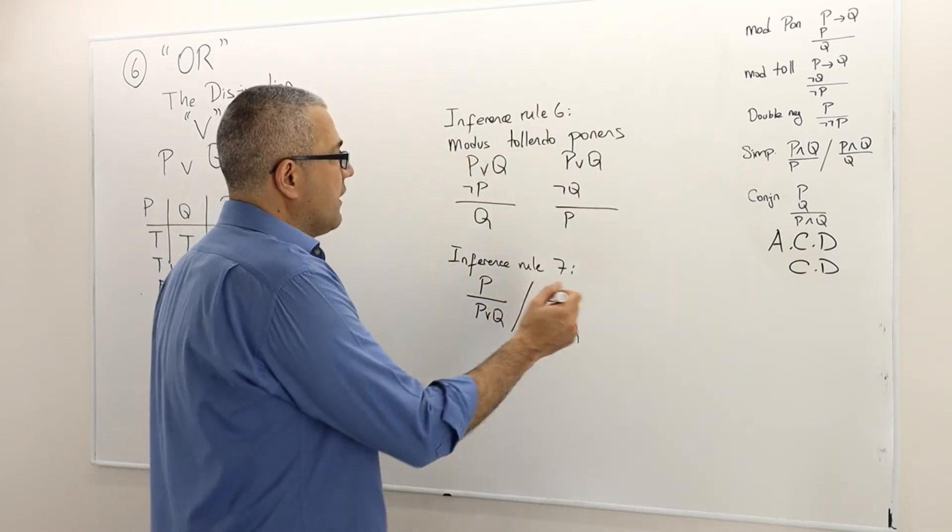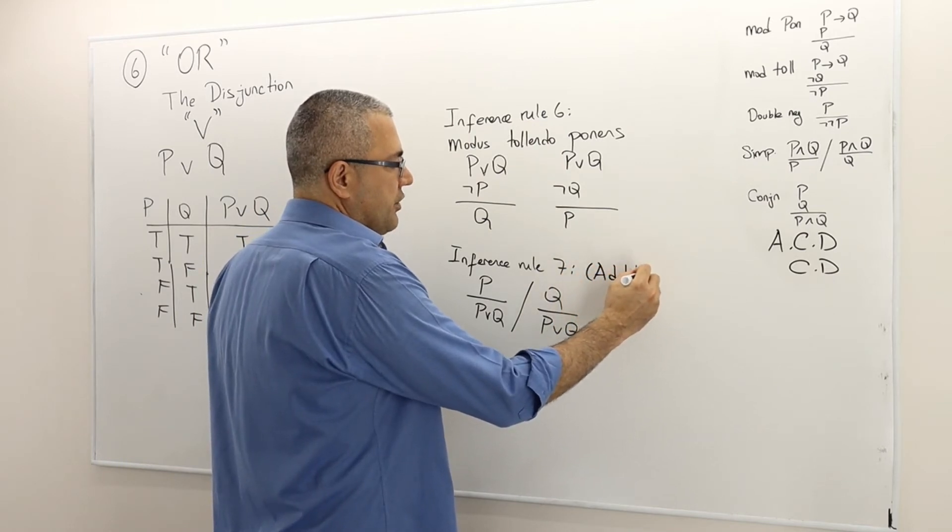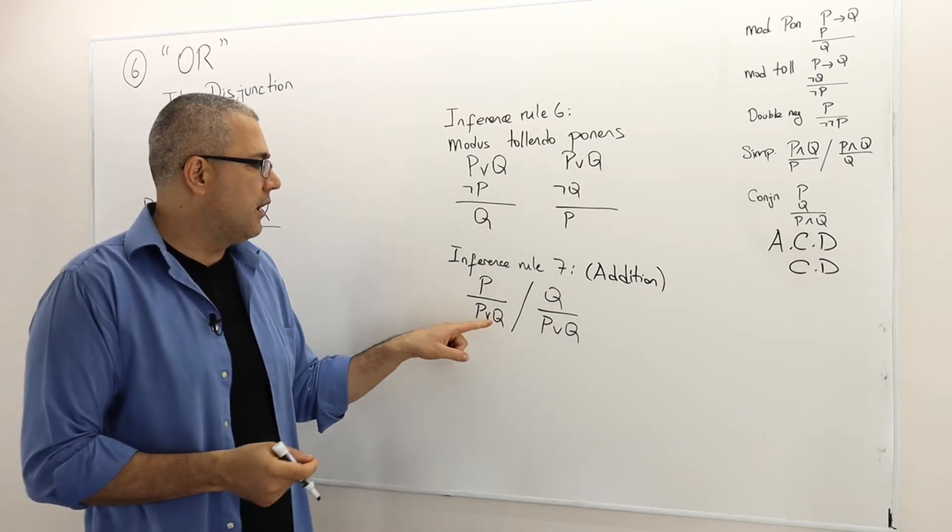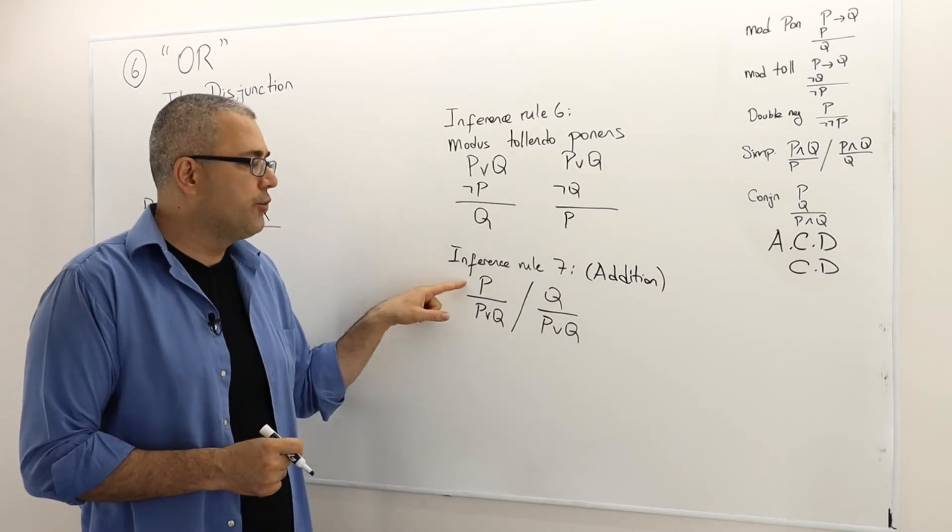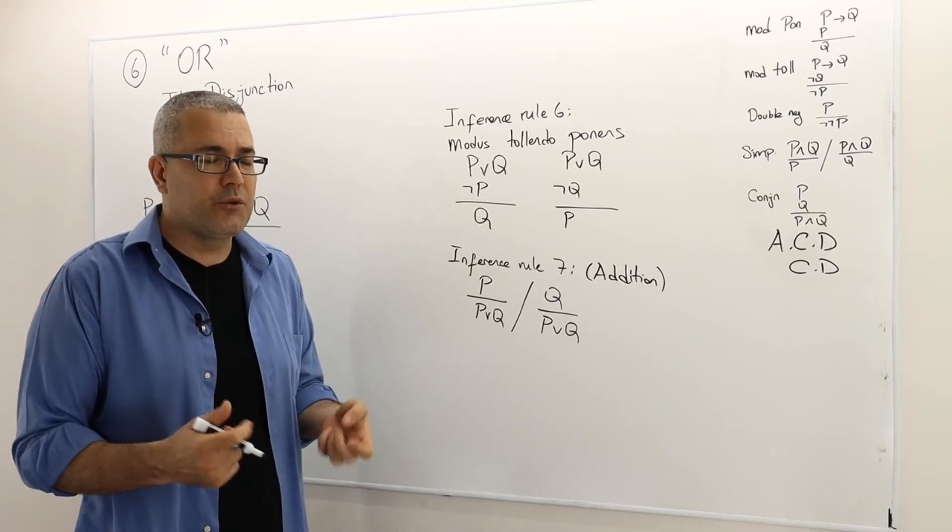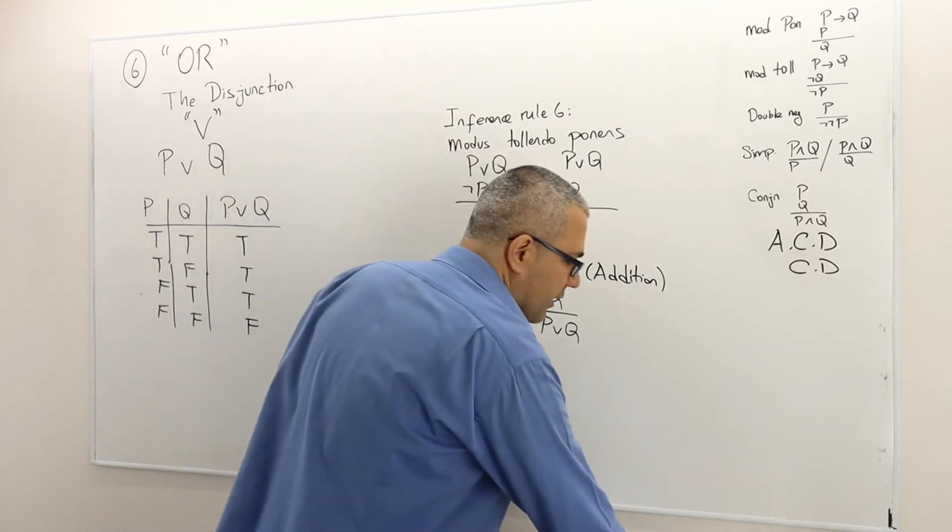Oh by the way, I forgot to write this. We call this rule addition. Adding extra atomic sentences to the true statement is not going to change the truth value of the final sentence.